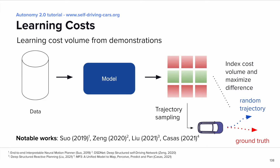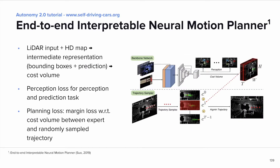The next general method can be described as learning costs, or holistic methods, as they provide some degree of explainability. Here we learn from actual driving data and in particular learn to output a cost volume describing costs in certain places. One possible way is to sample random trajectories, compare them against the expert trajectory, and try to maximize the difference in costs. One such work is the end-to-end interpretable neural motion planner from former Uber ATG. They go from raw sensor inputs — LiDAR plus an HD map — first outputting an intermediate representation of bounding boxes and predictions, and then predicting a cost volume. There are two subtasks: a perception loss and a planning loss, which is a margin loss maximizing cost differences between the expert trajectory and a randomly sampled one.